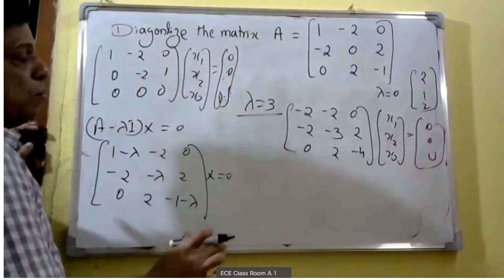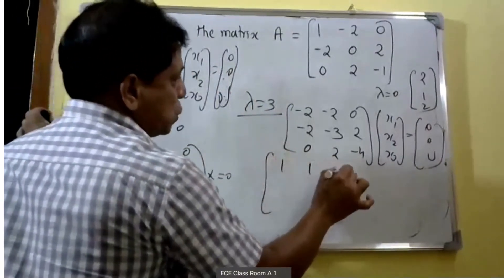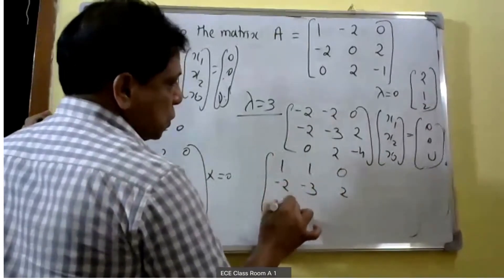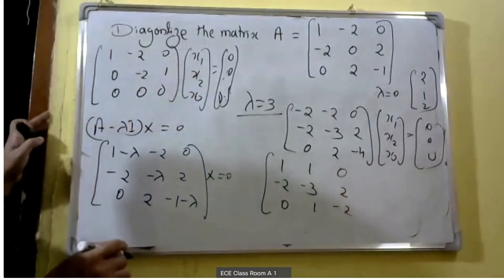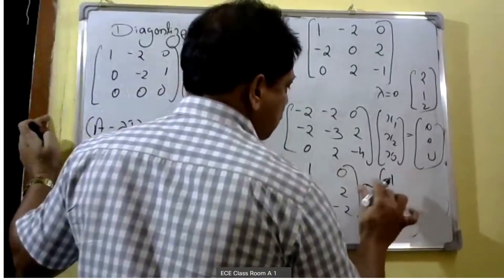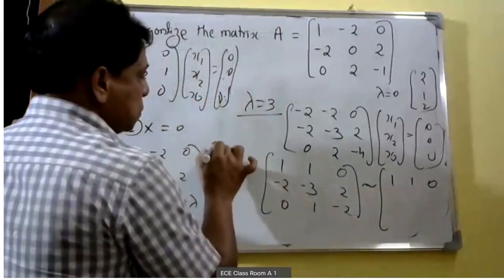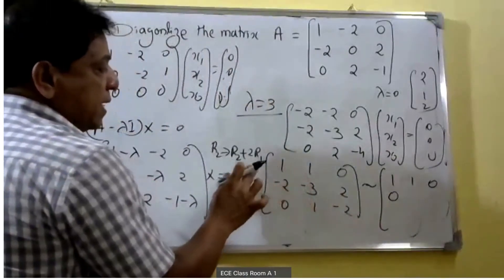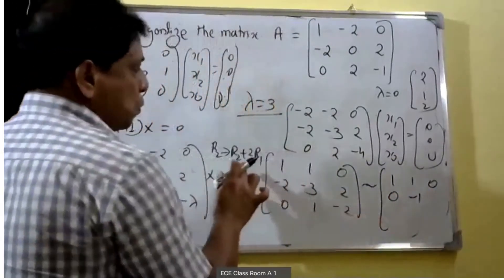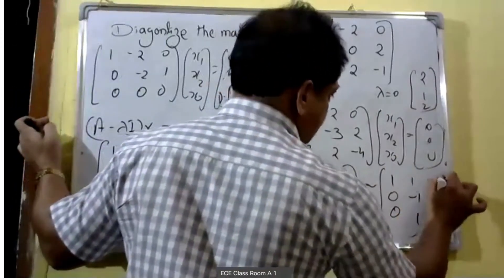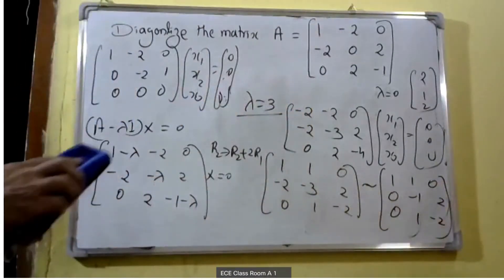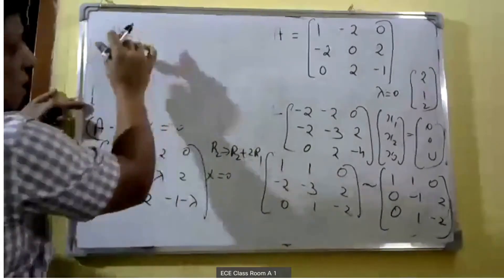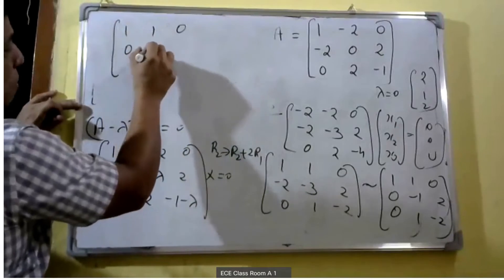Dividing the first row by minus 2 gives [1, 1, 0]. Dividing the third row by 2 gives [0, 1, -2]. Applying R2 changes to R2 plus 2R1: minus 2 plus 2 equals 0, minus 3 plus 2 equals minus 1, and 2 plus 0 equals 2. So the echelon form is [1, 1, 0; 0, -1, 2; 0, 0, 0] times [x1; x2; x3] equals zero.